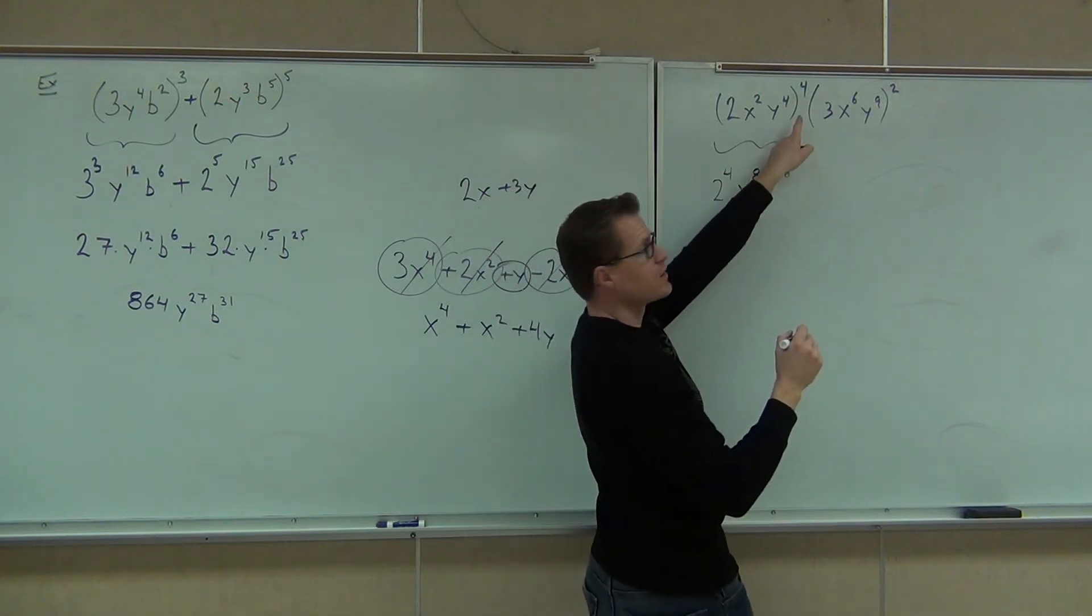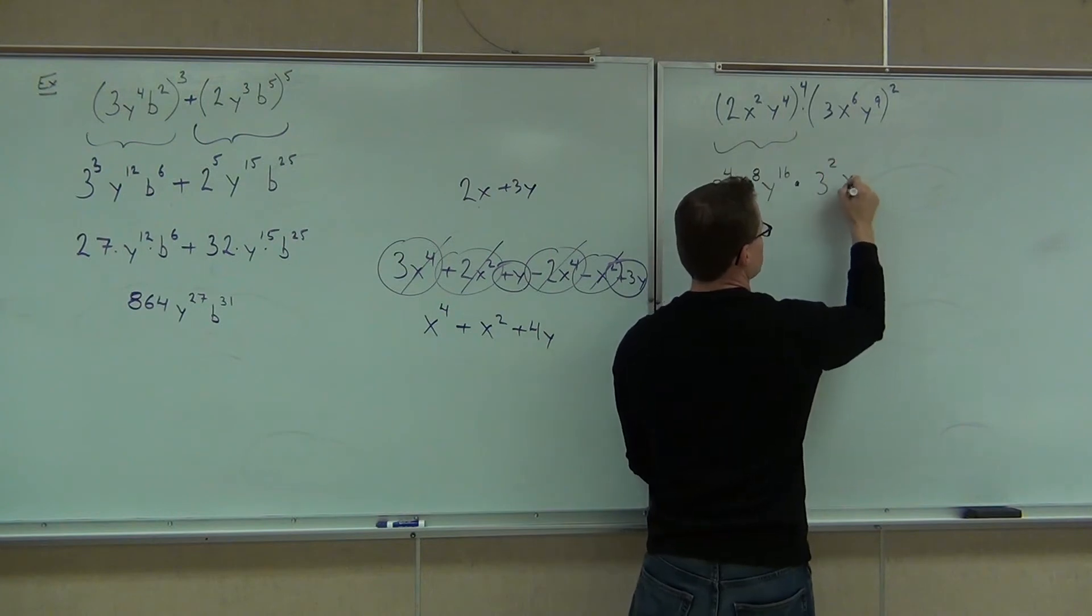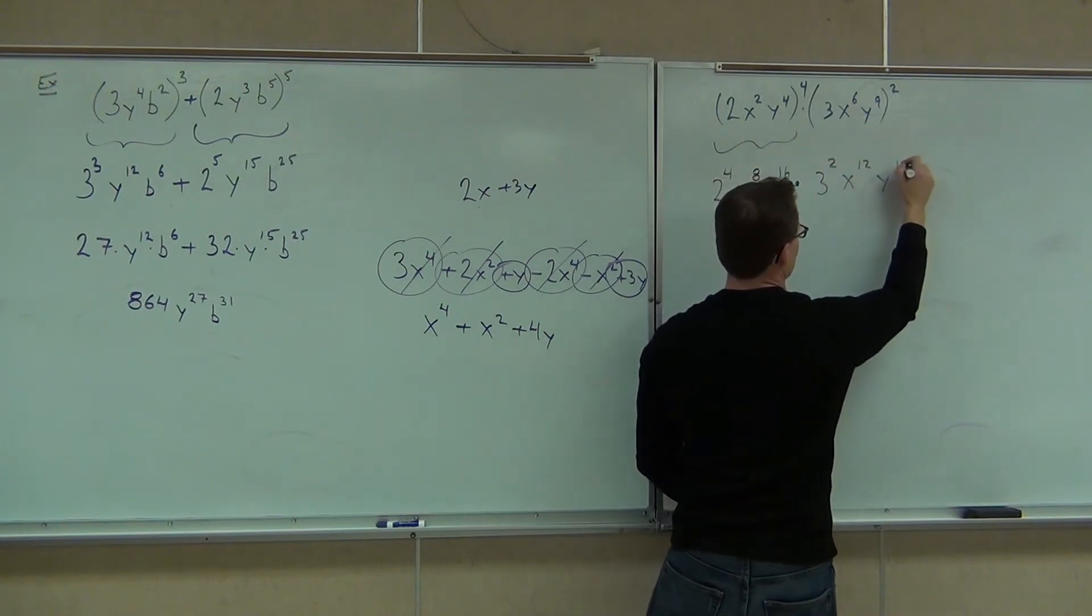Then, hey, look at this. This is times, so you're going to have the times there. This would be 3 squared x to the 12th, y to the 18th. Yes, no?